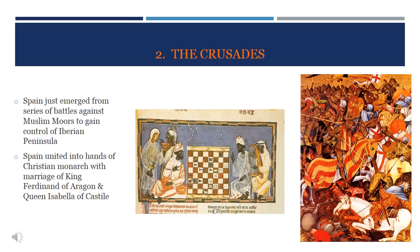Europe was also emerging from several centuries of warfare, including the Crusades. In particular, Spain had just emerged from battles against the Muslim Moors to gain control of the Iberian Peninsula. Spain then united under a Christian monarch through the marriage of King Ferdinand of Aragon and Queen Isabella of Castile. This is important because these two become the biggest patrons of Christopher Columbus, who leads an expedition into the New World, even though he does so unwittingly at first.